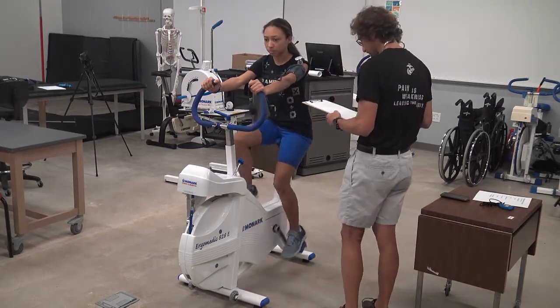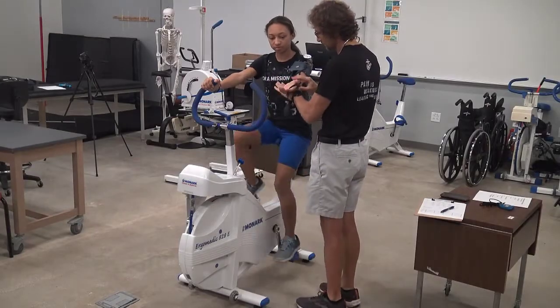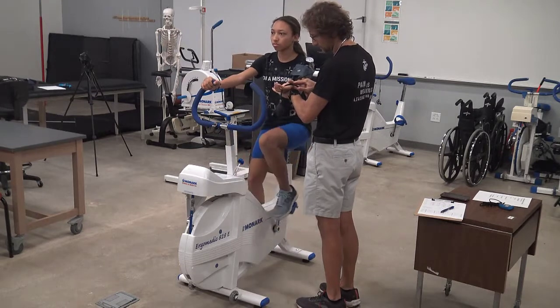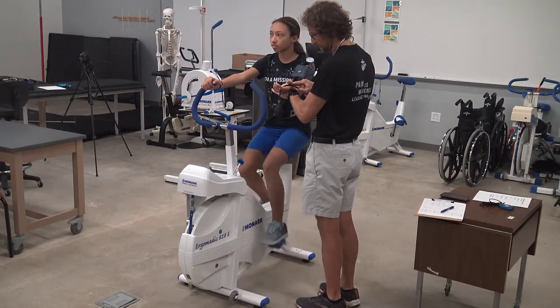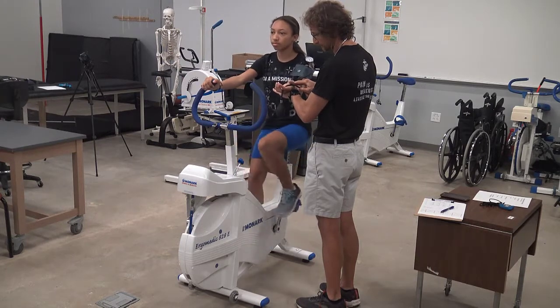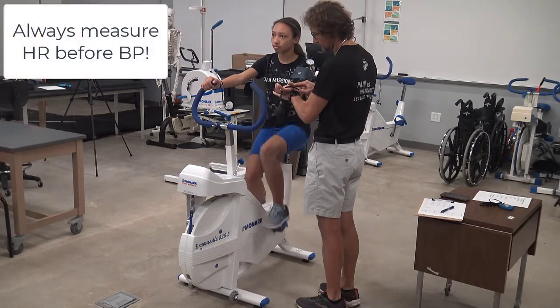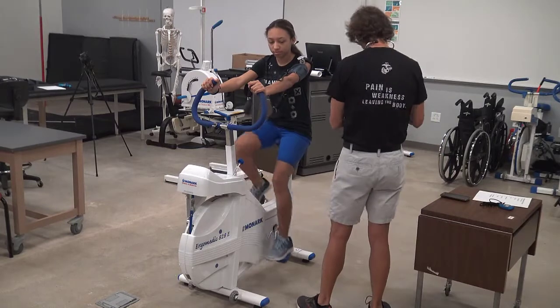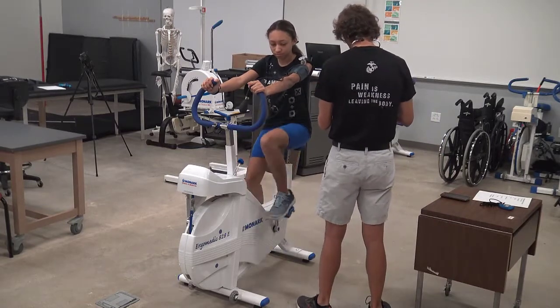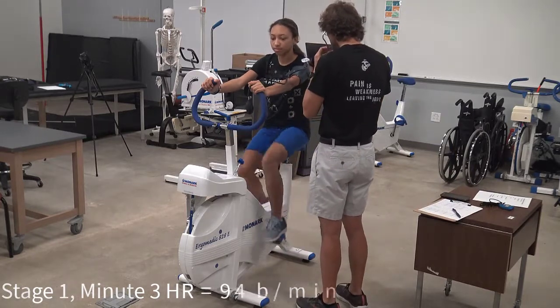We now fast forward to the end of the third minute which is the busiest point of the stage because not only do we have to take heart rates, we also have to take blood pressure, RPE, and we have to assess whether or not our client is in steady state. The most important data point we need, however, is heart rate. We always measure heart rate before blood pressure and RPE. Be it known that heart rate always takes precedence over the other two. For the third minute of this first stage, our heart rate is 94.